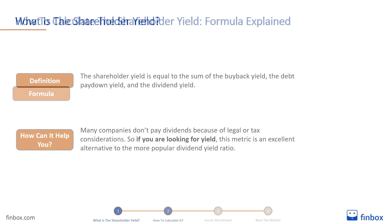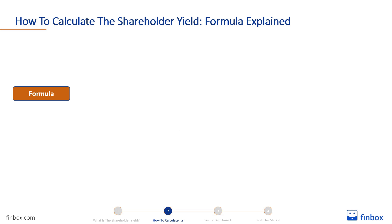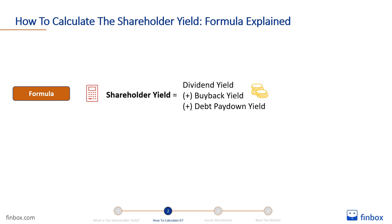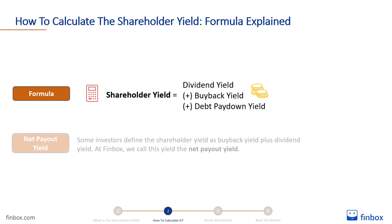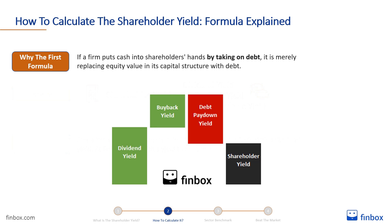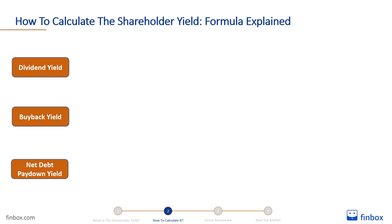We believe that the more comprehensive formula to calculate shareholder yield is dividend yield plus buyback yield plus debt paydown yield. Some investors define the shareholder yield as buyback yield plus dividend yield. At Finbox, we call this the net payout yield. We prefer the first formula because it provides investors a better picture of a company's total yield. If a firm puts cash into shareholders' hands by taking on debt, it is merely replacing equity value in its capital structure with debt. Let's break down the individual components of the formula.